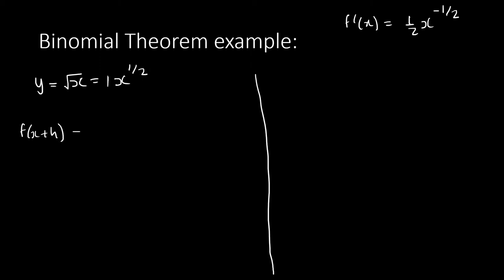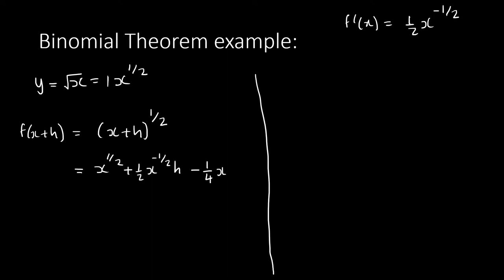Before anything, determine f(x+h). Our f(x) is x^(1/2), so f(x+h) = (x+h)^(1/2). Expand using binomial theorem: first term is x^(1/2), second term is (1/2)x^(−1/2)·h, third term is (1/2)(1/2−1)/2 · x^(−5/2) · h² which gives −(1/4)x^(−5/2)·h² over 2, plus dot-dot-dot.